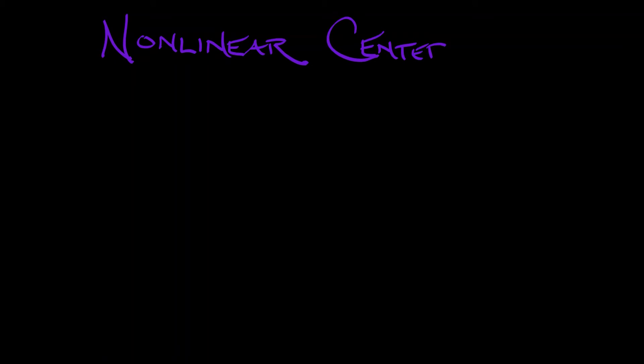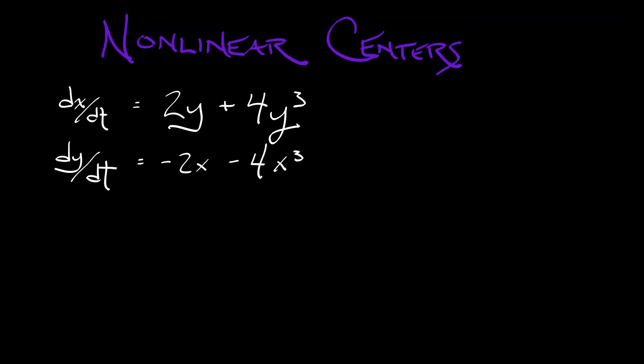Here's an example. Consider the continuous time system dx/dt equals 2y plus 4y cubed, and dy/dt equals minus 2x minus 4x cubed. Now you can see there's an equilibrium at the origin and a sort of symmetry in this system. Let's investigate.